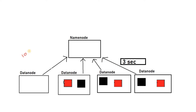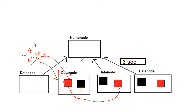Suppose one client came and they want to write 100 MB of data. By default our block size is 64 MB, so this 100 MB of data will be split into two blocks: 64 MB and 36 MB. Different blocks will be written in parallel fashion to the first data node, and then from the first data node replication will happen sequentially to other data nodes based on availability, creating replicas across the cluster.